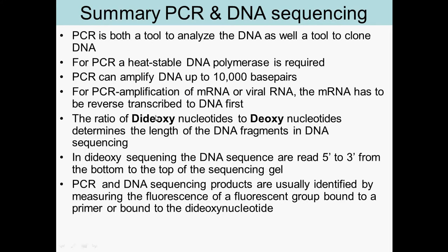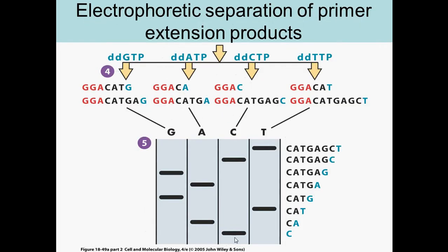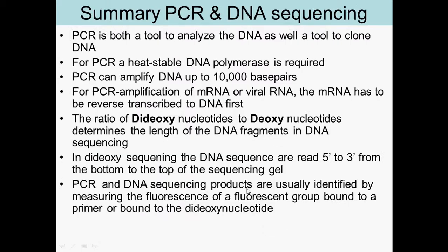Key review points: the ratio of dideoxy to deoxy nucleotides determines the length of the DNA fragments in dideoxy sequencing. The sequence is always read 5' to 3'. PCR and DNA sequencing products are usually identified by measuring fluorescence.